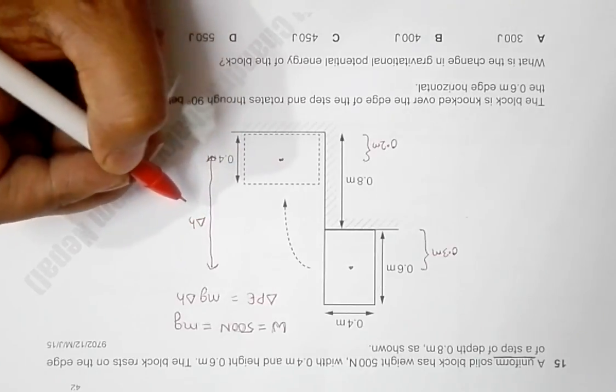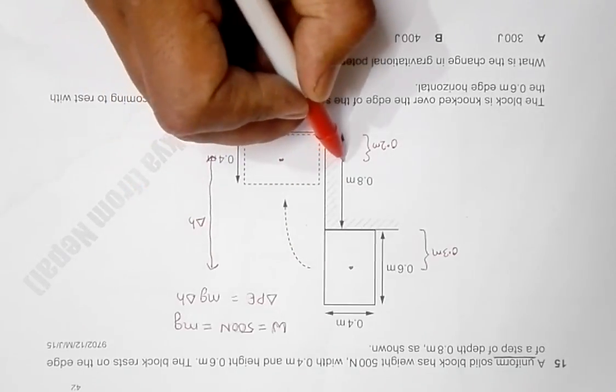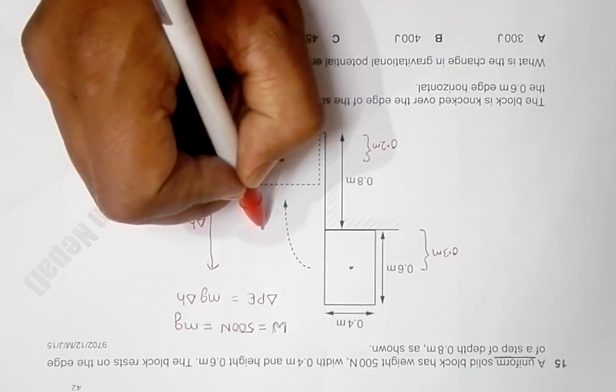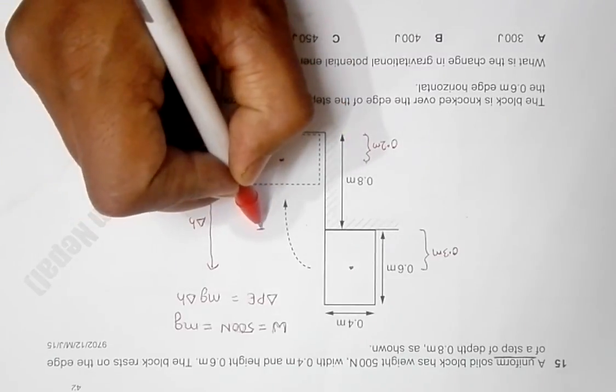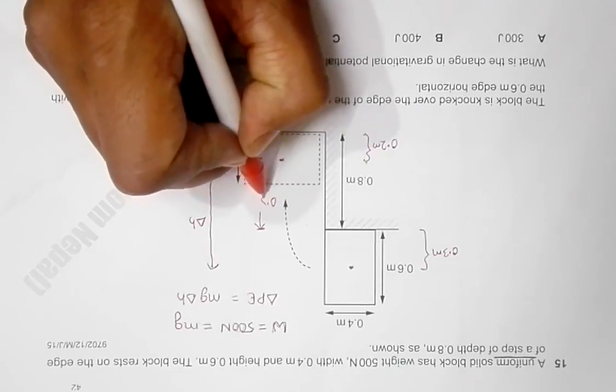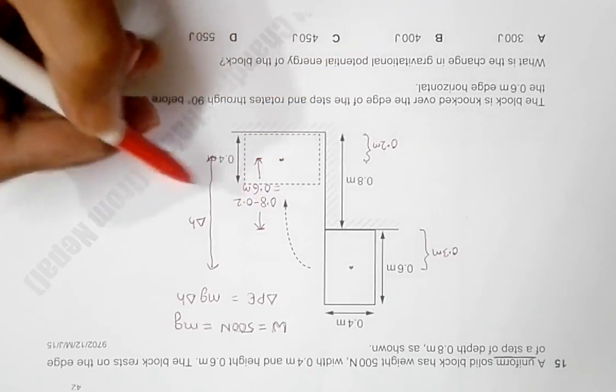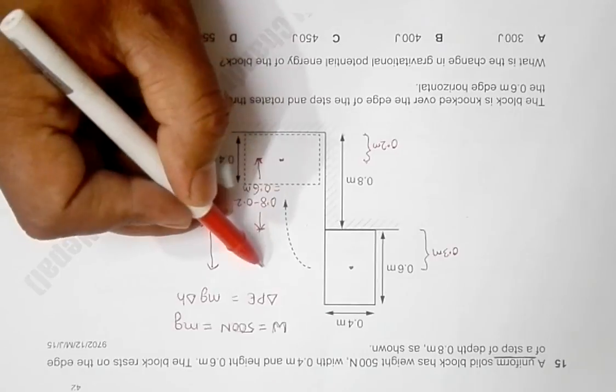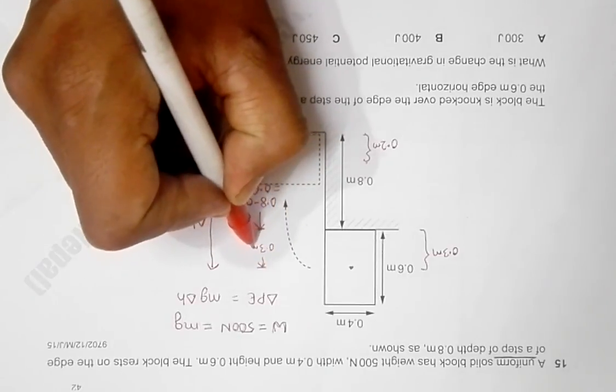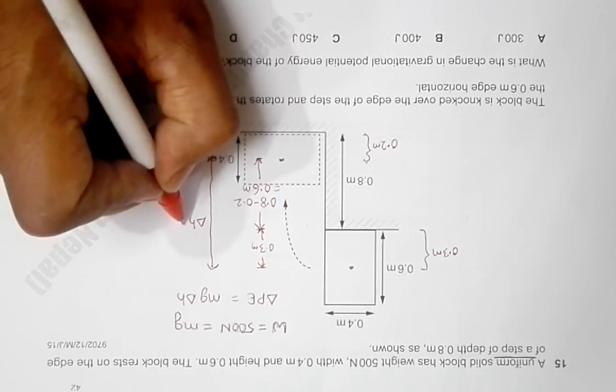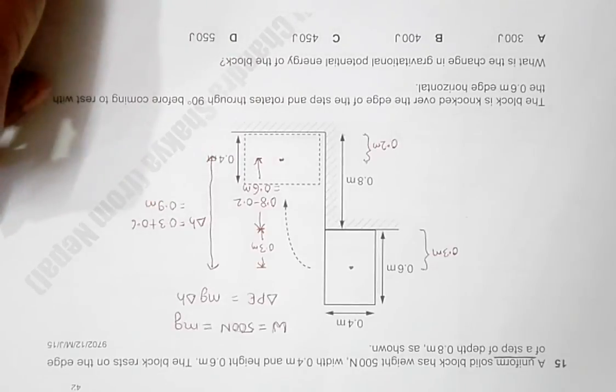It should be equal to 0.3, which is already here. Now we need to find the distance from here to here. Since this is 0.8 and since this is 0.2, this height should be equal to 0.8 minus 0.2, equal to 0.6 meters. So this is 0.6, and from here to here we have 0.3 meters. So the total change in height is equal to 0.3 plus 0.6 equals 0.9 meters.